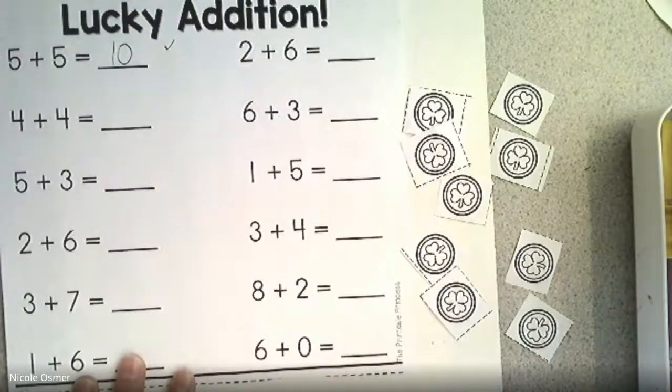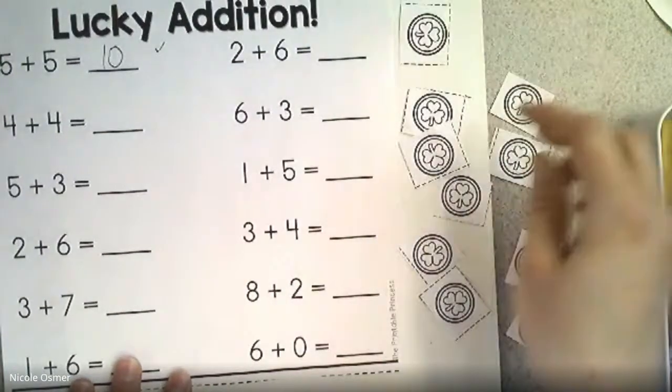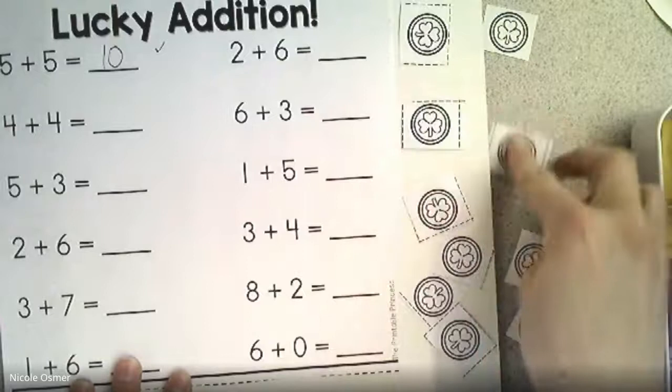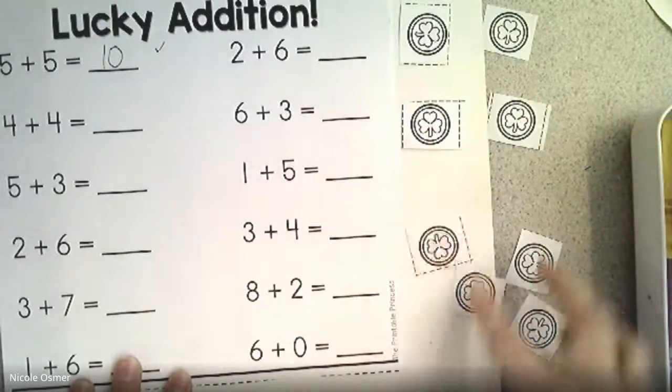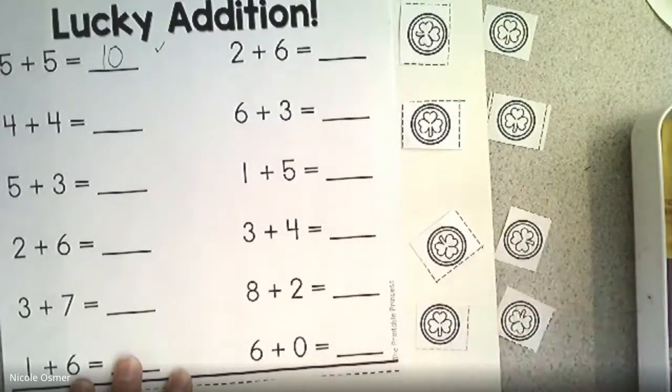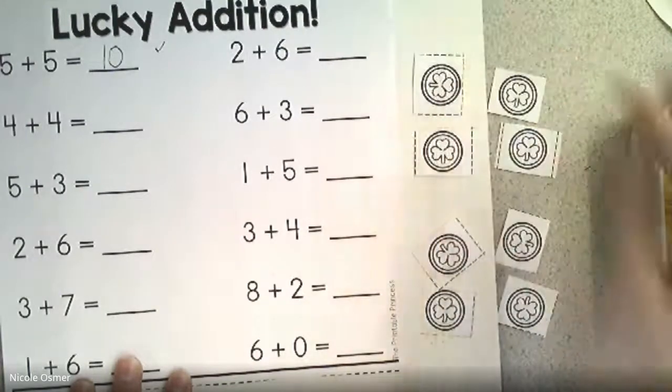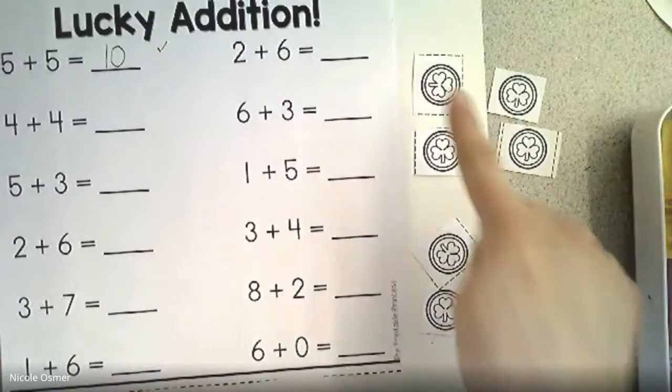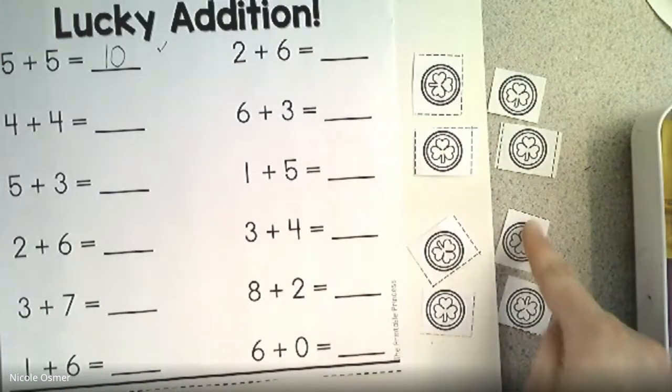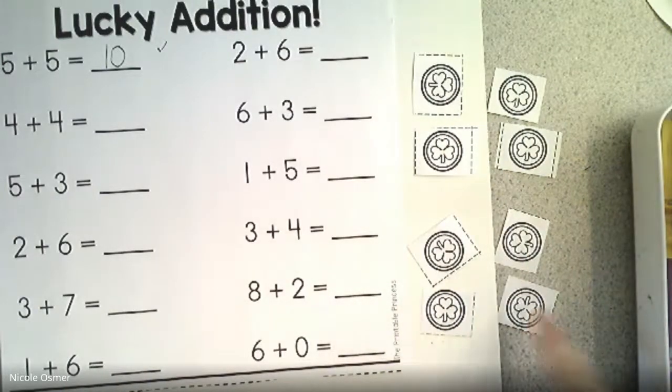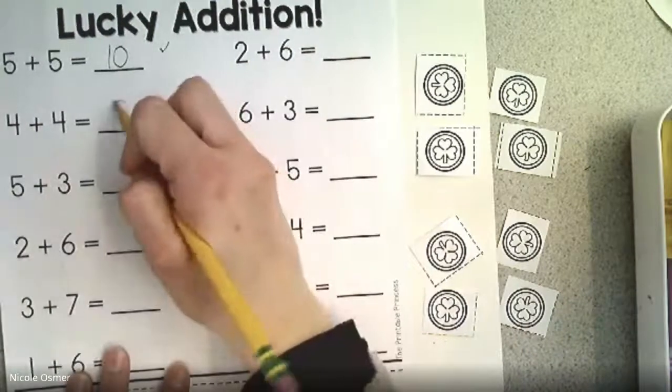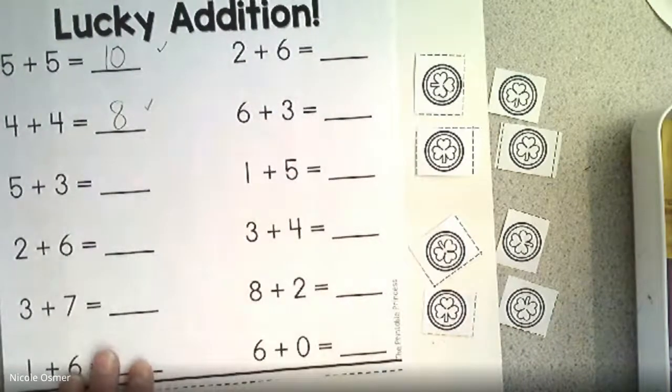Now add four and four. So one, two, three, four. One, two, three, four. I don't need these so I'm putting them aside. I'm only using four and four to get how many all together. One, two, three, four, five, six, seven, eight. Four and four equals eight. Check your work if you already got that.